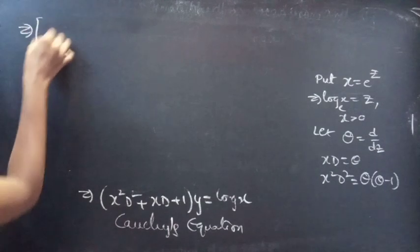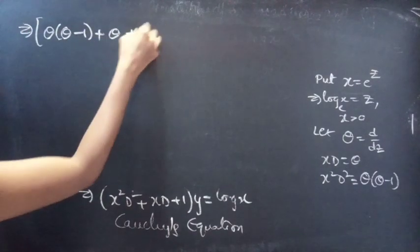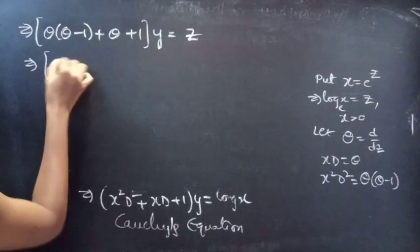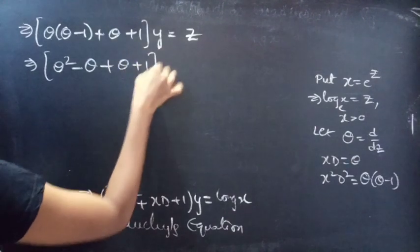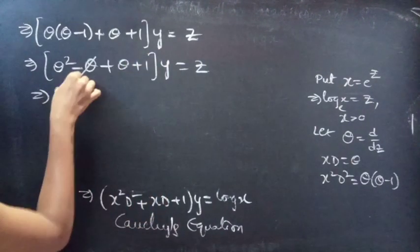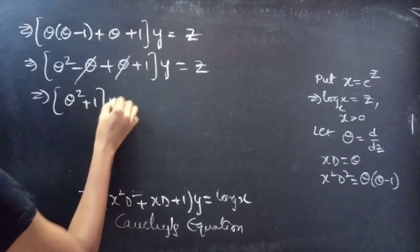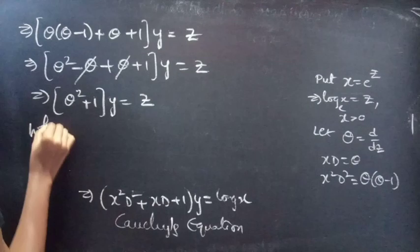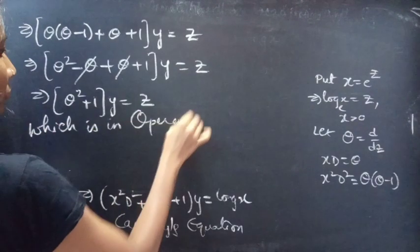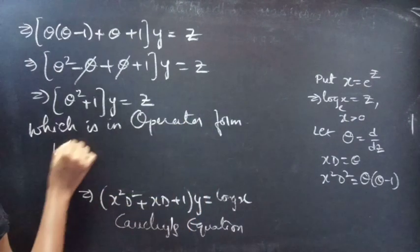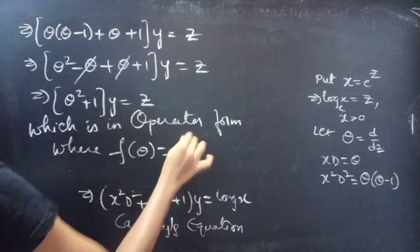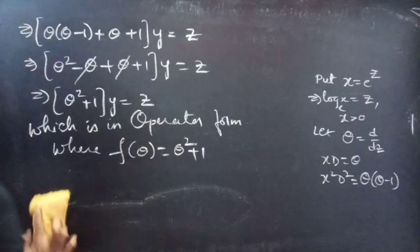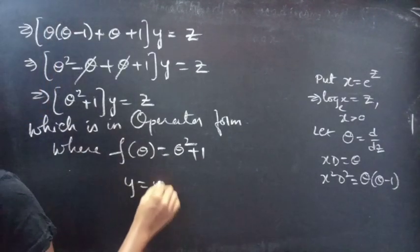Now we replace x² D² by θ(θ − 1), x D by θ, and log x by z. The equation becomes θ(θ − 1) + θ + 1 into y = z. Here −θ + θ cancels, and we get (θ² + 1) y = z, which is in operator form f(θ) y = z, where f(θ) = θ² + 1.